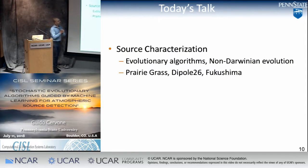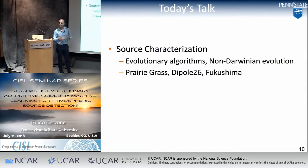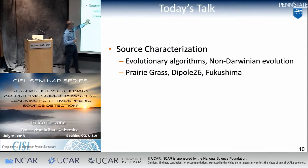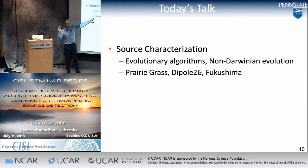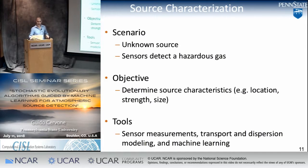Today's talk will cover evolutionary algorithms, non-Darwinian evolution — something I worked on — and then we'll apply them to source characterization problems. Since we're at NCAR, I tried to come up with a real atmospheric problem. We'll use three different datasets: the Prairie Grass experiment from around 1957, DIPOLE-26 from the 1980s, and then a real accident — Fukushima in 2011.